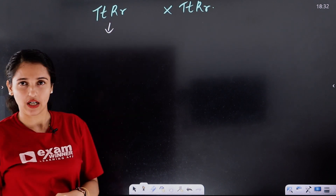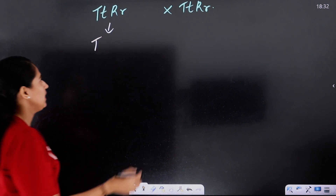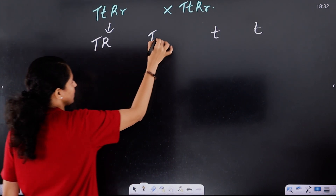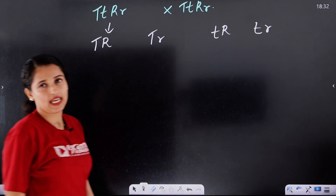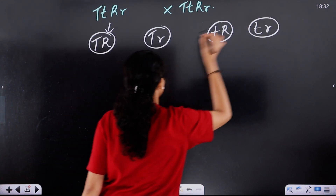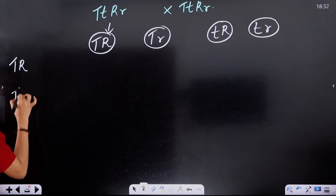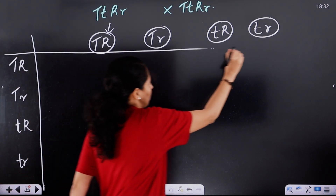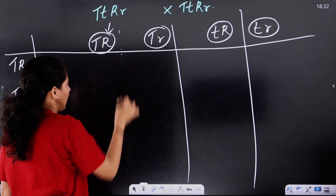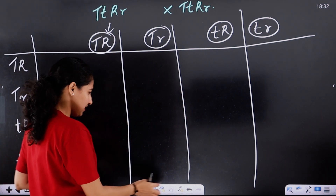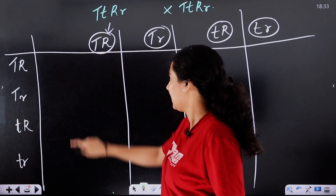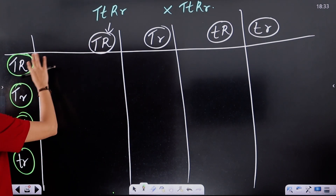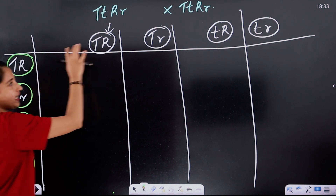We take the gametes from the F1 plant. We don't have to use a Punnett square alone — we represent the dihybrid cross using a Punnett square. Let's take a look at the monohybrid or dihybrid cross Punnett square. Here we are at the Punnett square, and we will cross using it.